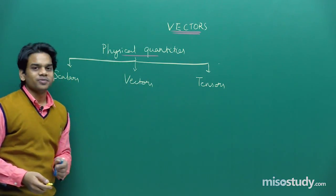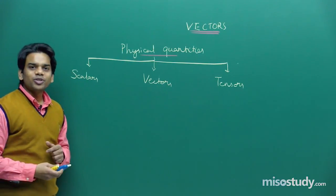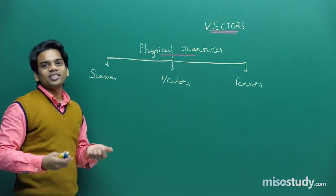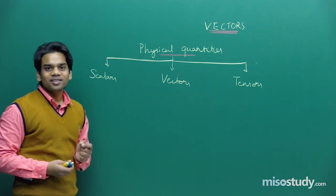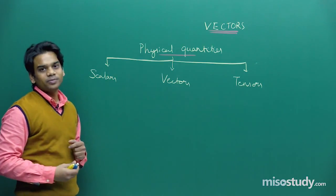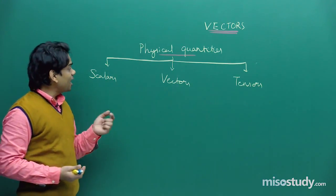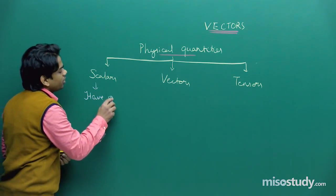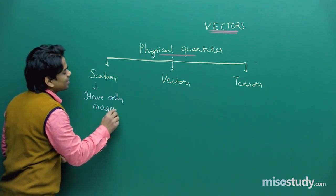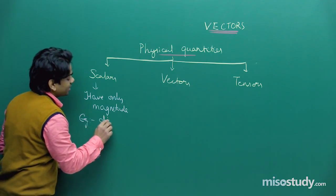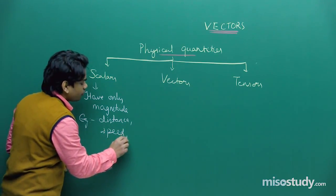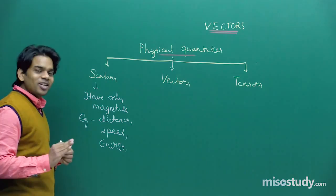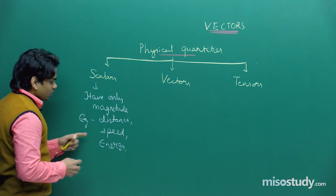Let's understand scalars and vectors. Suppose you travel from your home to school — there are three paths with different distances. Distance is a measure of path length, so it has only magnitude and no direction. Such a quantity is known as a scalar. Scalar quantities have only magnitude. Examples include distance, speed, energy, work, and current.